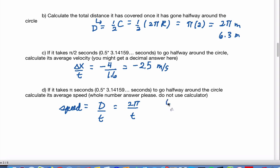If you used time equals pi over two, you're going to get your speed as four meters per second. If you used time equals pi, then you'll get your speed as two meters per second.